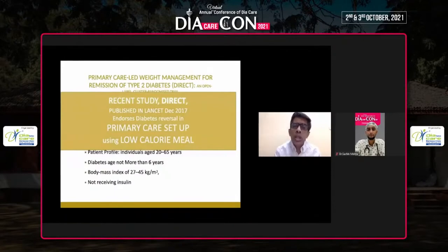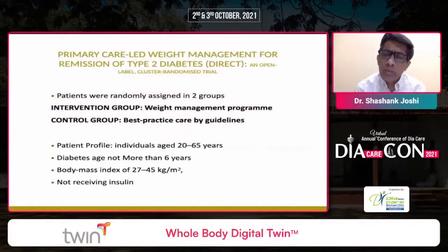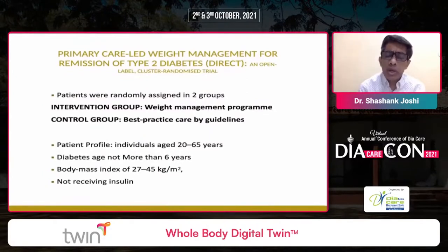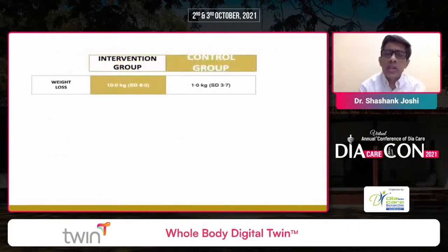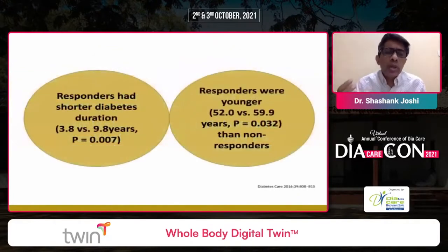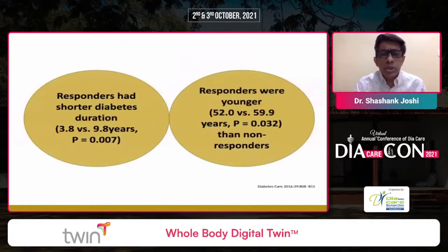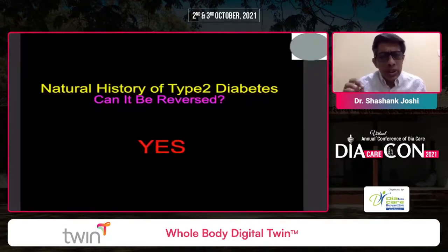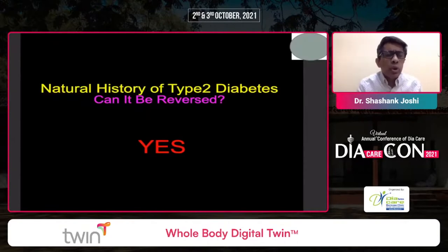They conducted the DIRECT study in a primary care setting in the UK, published in December 2013. They randomly assigned two groups: a weight management intervention group and a best-practice control group. Patients were aged 20–65, had diabetes no more than six years, BMI between 27 and 45, and were not receiving insulin. Results clearly showed remission of diabetes was possible in primary care in at least half the subjects. Those who responded better had shorter duration of diabetes and were younger.